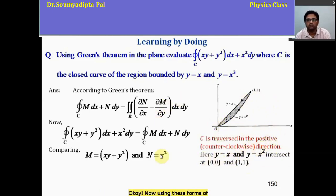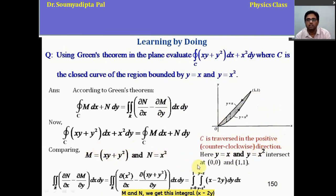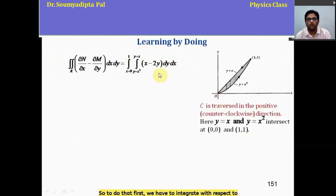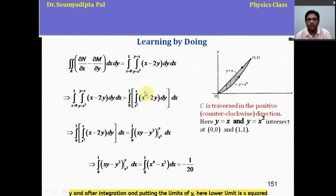Now, using these forms of m and n, we get this integral x minus 2y and x varies from 0 to 1 and within this range, y varies from x square to x. Next, we have to solve this integration. So, to do that, first we have to integrate with respect to y. And after integration and putting the limits of y, here lower limit is x square and upper limit is x, we get this integrand x to the power 4 minus x cube. Then, after doing the integration with respect to x and putting the limits, we get this value, minus 1 by 20. So, this is the value of close line integration given in the problem.